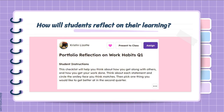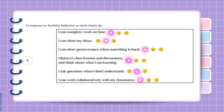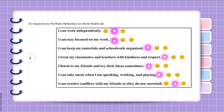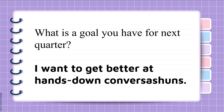Sometimes I create assignments in Seesaw so students can reflect on their work habits. This is one I created where students reflect on various habits, and at the end I ask them to come up with their own goal. This student wanted to get better at hands-down conversations — she participated a lot and liked structure, liked to raise her hand and get called on, but hands-down conversations where students just talk without raising hands were really hard for her. She actually told me she didn't like them, but she wanted to get better at it.